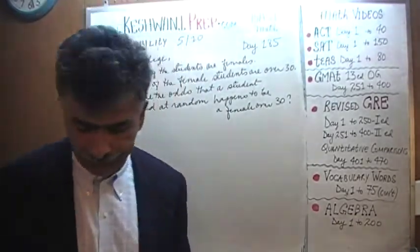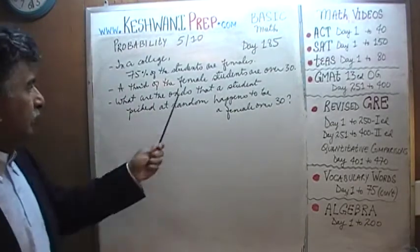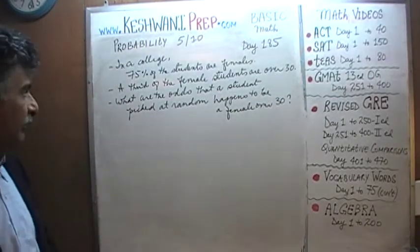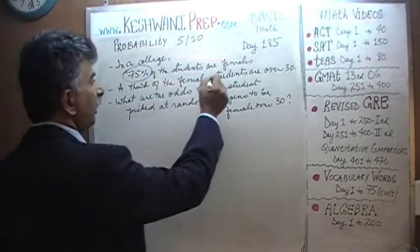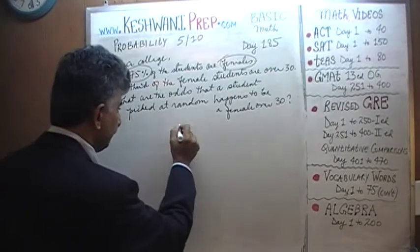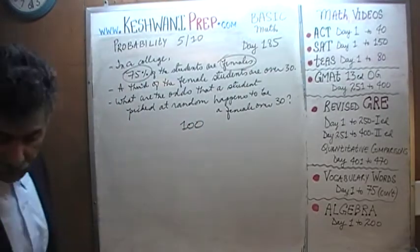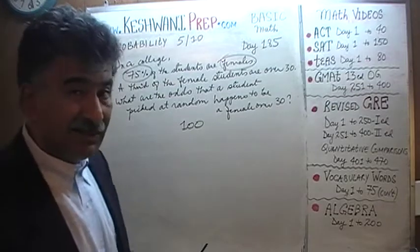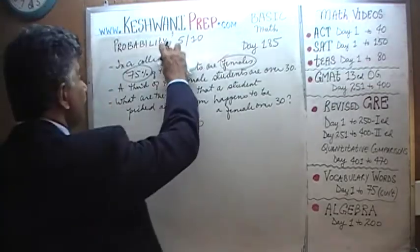Let's see what we can do here. So there are two steps — we take care of one step at a time. 75% of the students are female, so that's the first part we look at. Pretend we start out with 100 students. Sometimes they try to make it more intimidating by telling you there are a specific number of students in the college.